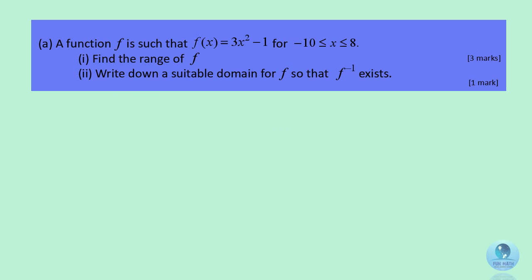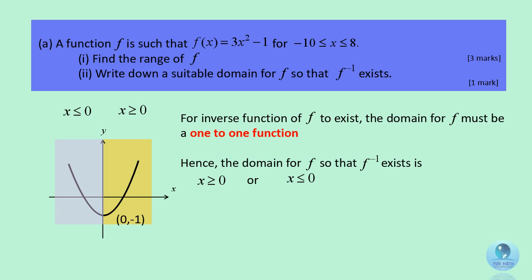For the second part, follow the same principle as before: for the inverse function of f to exist, the domain for f must be a one-to-one function. So the domain is x greater or equal to 0, or x lesser or equal to 0.